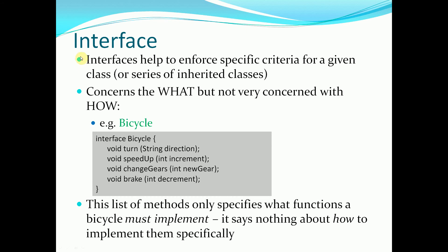Now we have interfaces. An interface helps us to enforce specific criteria for a given class or a series of inherited classes. This is mainly concerned with what, and not very much concerned with how. For example, if we have a bicycle interface, we want to say that any bicycle class we make from this should be able to exhibit the following methods: they should implement a method called turn, a method called speed up, a method called change gears, and a method for slowing down called brake. This list of methods only specifies what functions a bicycle must implement, but says nothing about how they are actually implemented — that is left up to you when you code each class that implements this interface.